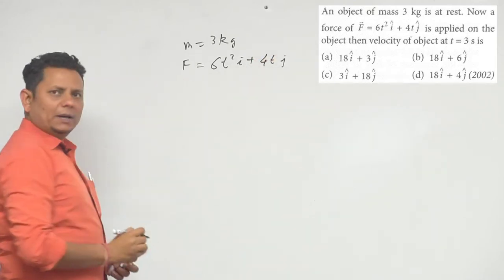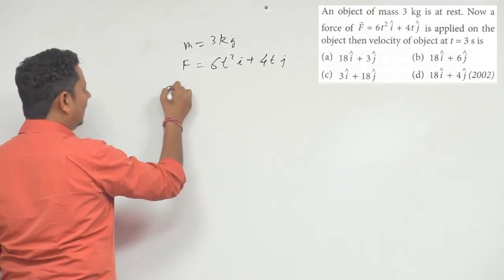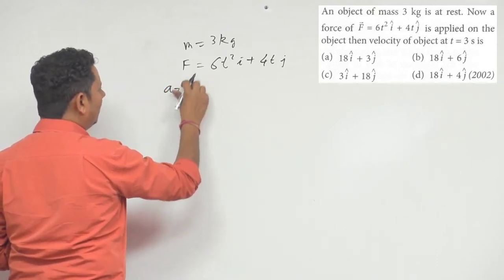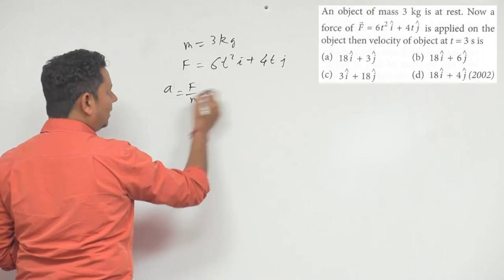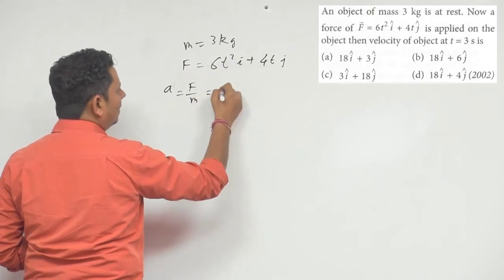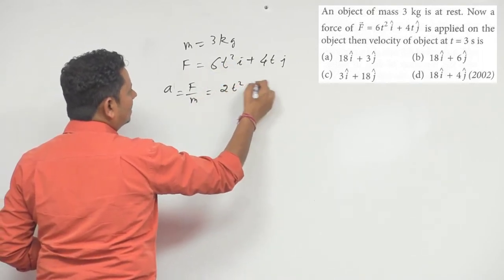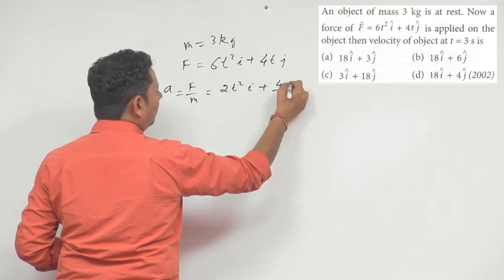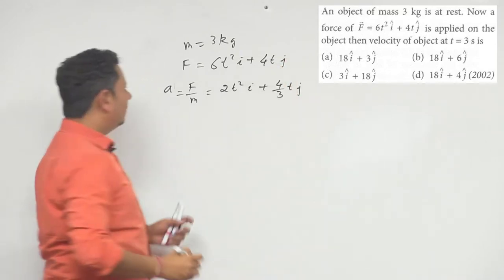You know that F = ma. So we can write that acceleration will be equal to force divided by mass. This will be 2t²i cap plus 4/3 tj cap. This is your acceleration.